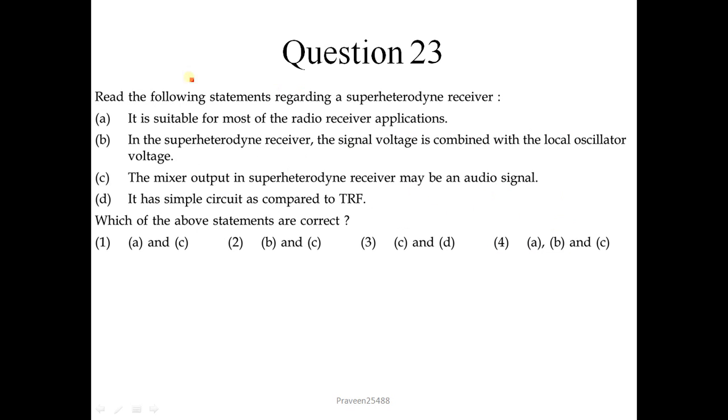Question number 23: Read the following statements regarding a superheterodyne receiver. It is suitable for most of the radio receiver applications - this is correct. It is used as a FM receiver. In the superheterodyne receiver, the signal voltage is combined with the local oscillator voltage - this is also correct. If you see the block diagram, signal voltage is combined with local oscillator voltage. The mixer output may be an audio signal - this is also correct. It has simple circuit as compared to TRF - this is not correct. So A, B and C is correct. Option number 4 is correct.